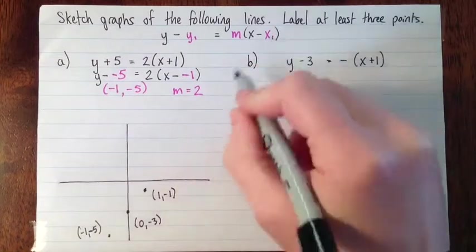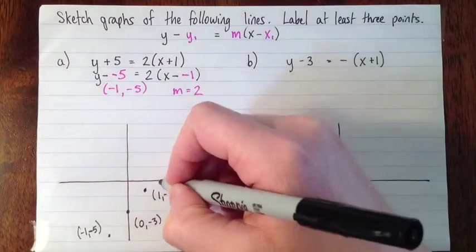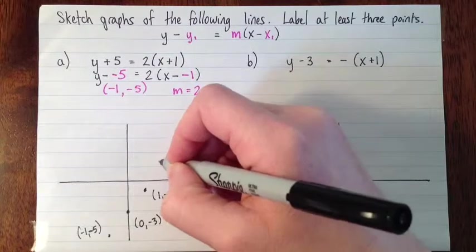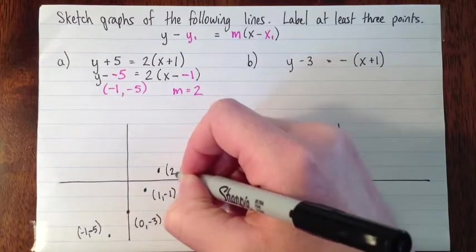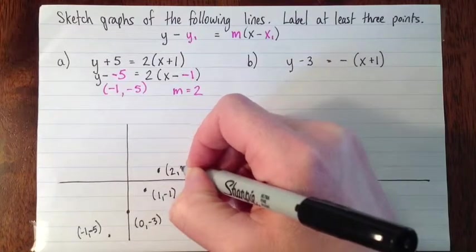I'll do one more. It only asks for 3, but let's go one more. So over 1 and up 2 more gets us to (2, 1).